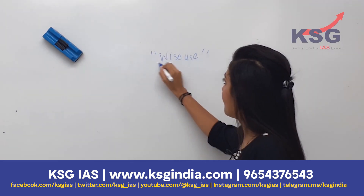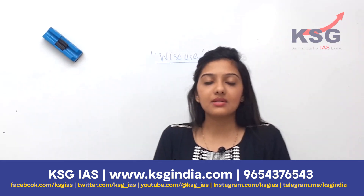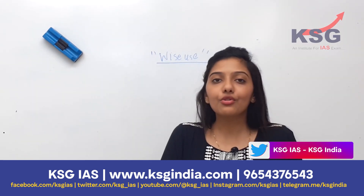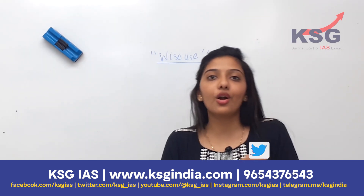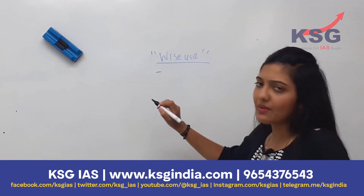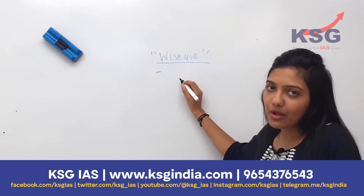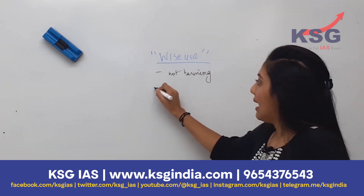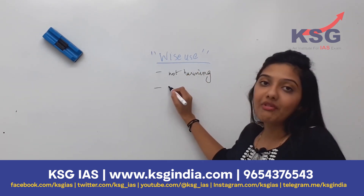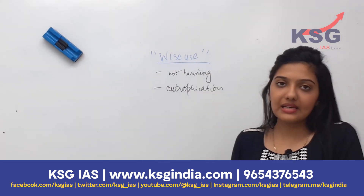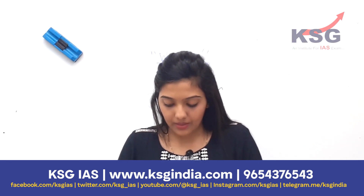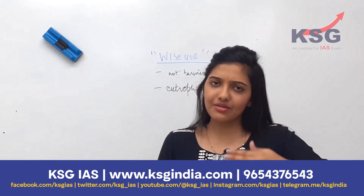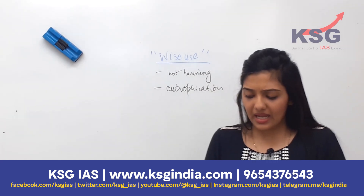Seeing such questions, even if you have not read the Ramsar convention directly, you can reason through what wise use could mean. Wise use is something which does not harm a wetland. So I listed these points one by one — not harming the biodiversity, preventing eutrophication, and other such things. Wise use means using a wetland without harming its health. I tried to list out some key points and cover the major aspects.